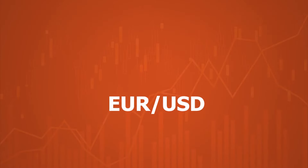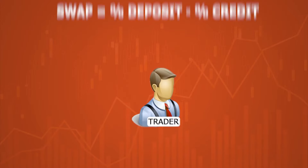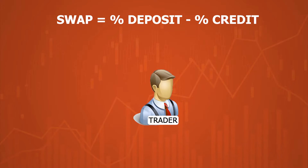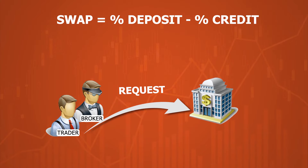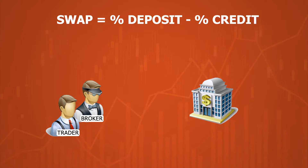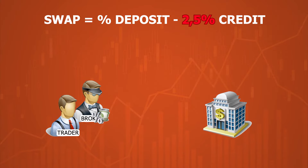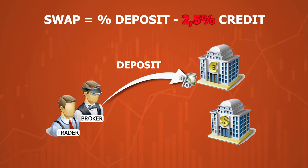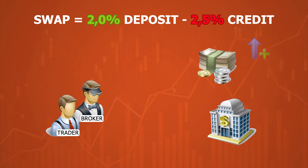Let's consider it in more detail using the example of buying the euro-US dollar pair. For this transaction, a trader takes a loan from a bank through a broker at a certain interest rate and immediately places it in the form of a deposit in euros. The conditions for calculating deposit interest are like calculating credit interest — only the interest rates are different.